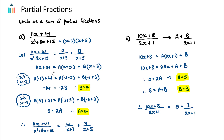Now a nice technique to solve for A and B is to recognize what x needs to be to make one term zero. To eliminate A, x needs to equal negative 5. Substituting x = -5: 11(-5) + 41 = A(-5+5) + B(-5+3), so -55 + 41 = 0·A + (-2)B, giving -14 = -2B, therefore B = 7.